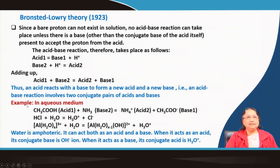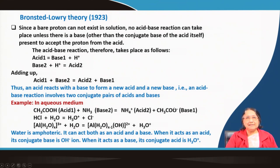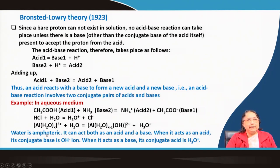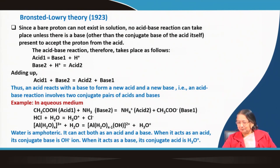For example, acetic acid (acid 1) and ammonia molecule (base 2) can produce ammonium ion. Acetic acid gives the proton, which is taken up by ammonia to form ammonium ion, and acetic acid is converted to its conjugate base — the acetate ion. Acid 1 and base 1, and base 2 and acid 2 are the two conjugate pairs. We also know that water is amphoteric — it can act both as an acid and a base. When it acts as an acid, its conjugate base is OH⁻; when it acts as a base, its conjugate acid is the hydronium ion.